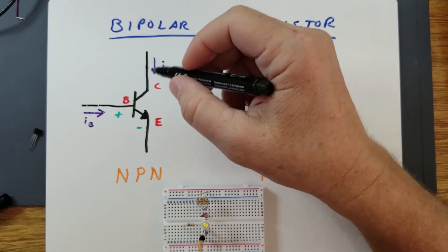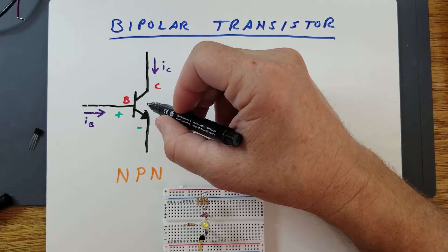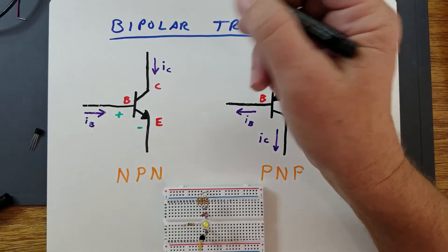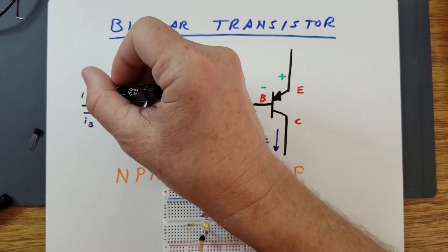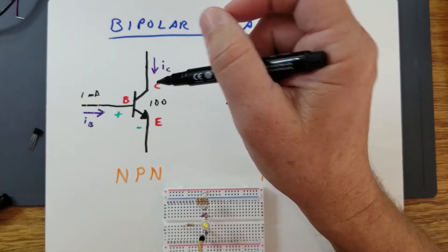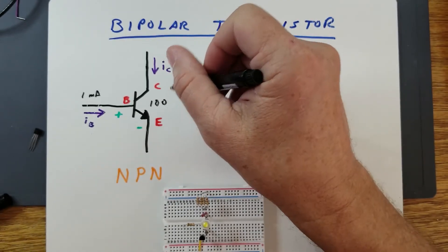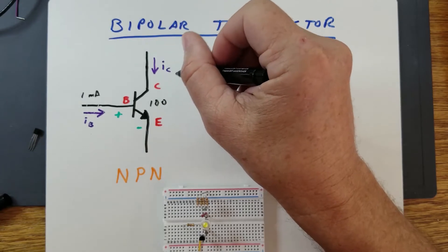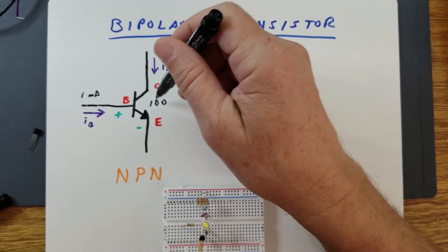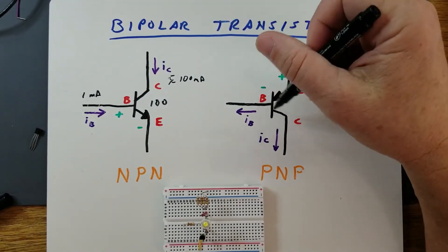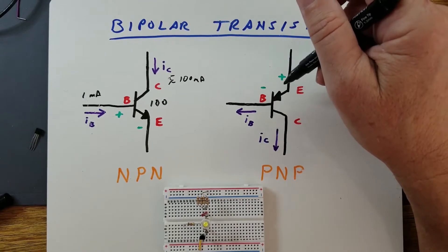Collector current is proportional to the base current depending on the gain of the transistor. The base current is amplified by the gain, or beta, of the transistor to give you the collector current. For example, if you had a gain of 100 and a base current of 1 milliamp, configured in the active region, your collector current would be 100 milliamps. The same calculation applies for the PNP transistor, just using a different polarity configuration.